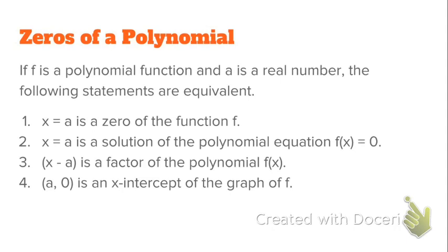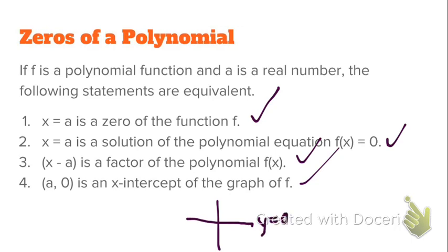The following four statements are all equivalent. If you know that x equals a is a zero — say a function has a zero at x equals 3 — then you can also say x equals 3 is a solution to the function, since a solution implies it makes the function equal zero. You can also say x minus that zero is going to be a factor. We've seen that before when solving quadratic equations — if we factored to get x minus 2 times x minus 3, we know the zeros are x equals 2 and x equals 3. And we know those zeros are also where the x-intercepts occur on the graph, because zero implies y is zero, and every point on the x-axis has a y-coordinate of zero.